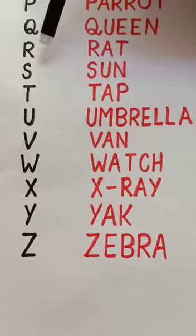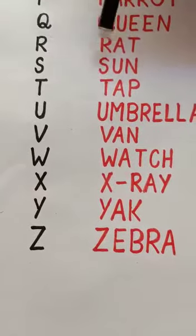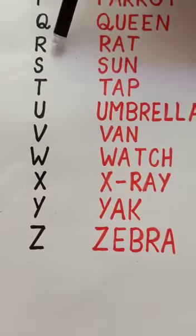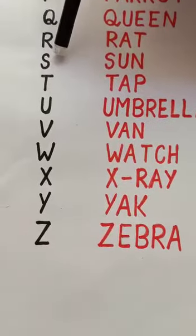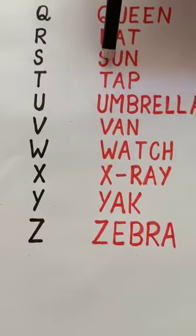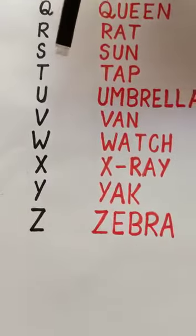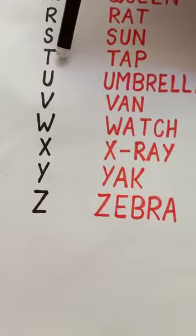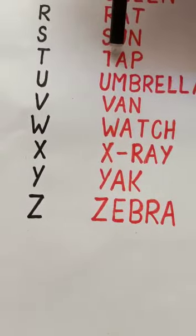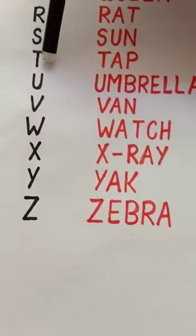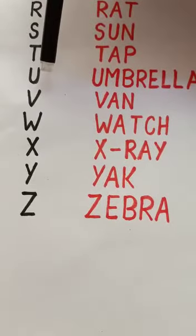This is R. R for rat. This is S. S for sun. This is T. T for tap.